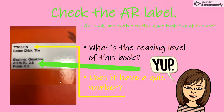I advise you to make sure you understand where that is in the back of the book. You have ATOS BL 2.8 — this is the book level. This is the quiz number: 77918. So when you log into AR you don't have to type the title of this book, The Easter Chick. You can just type in the number 77918. If you are ready to take a quiz you can always just put in the number.